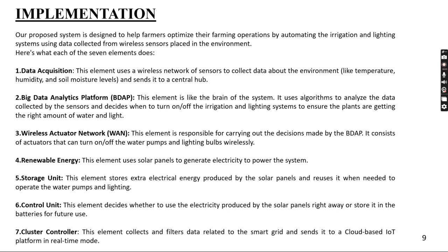Fourth, renewable energy: this element uses solar panels to generate electricity to power the system. Fifth, the storage unit: this element stores extra electrical energy produced by the solar panels and reuses it when needed to operate the water pumps and lighting. Sixth, the control unit: this element decides whether to use the electricity produced by the solar panels right away or store it in the batteries for future use.